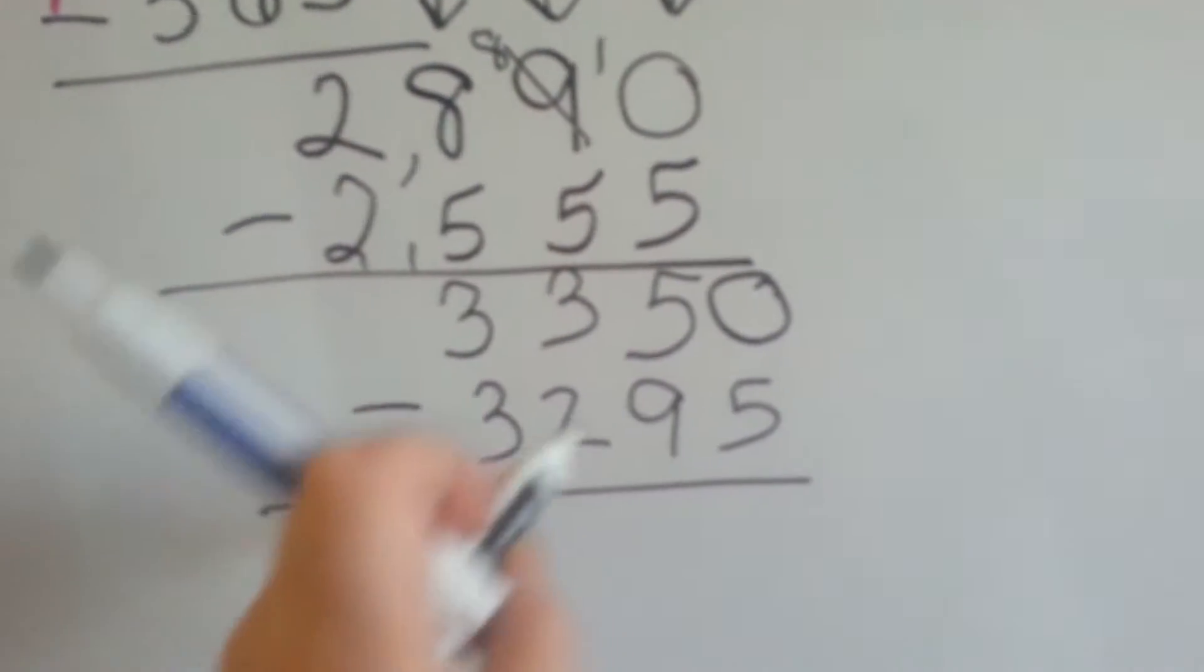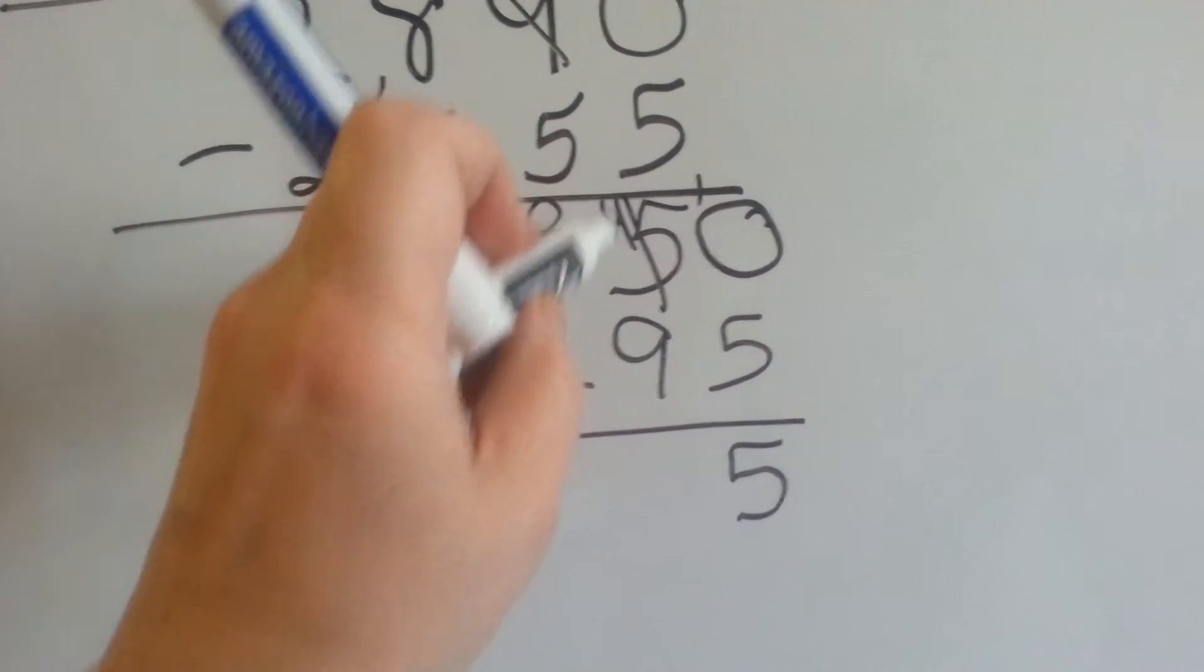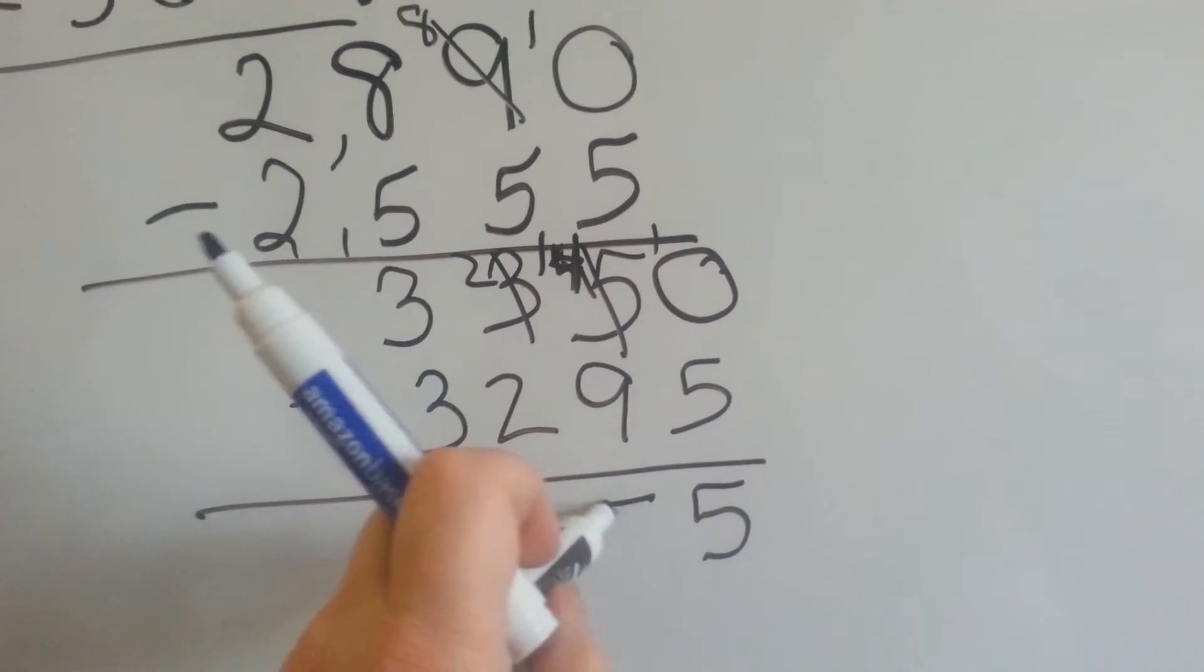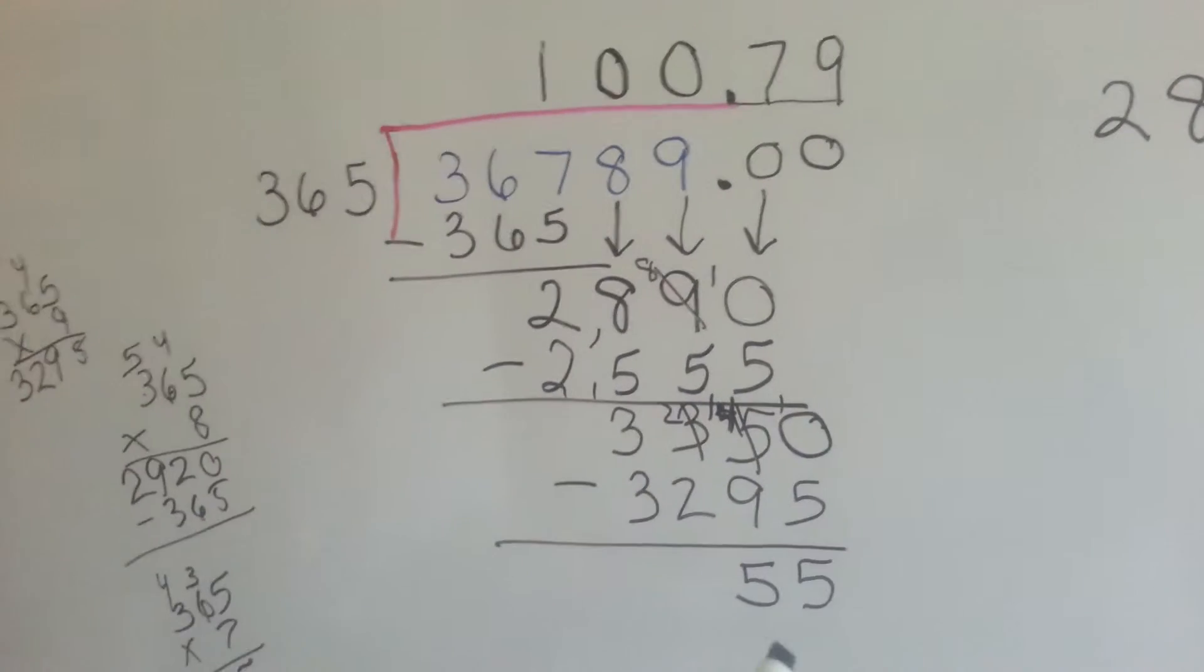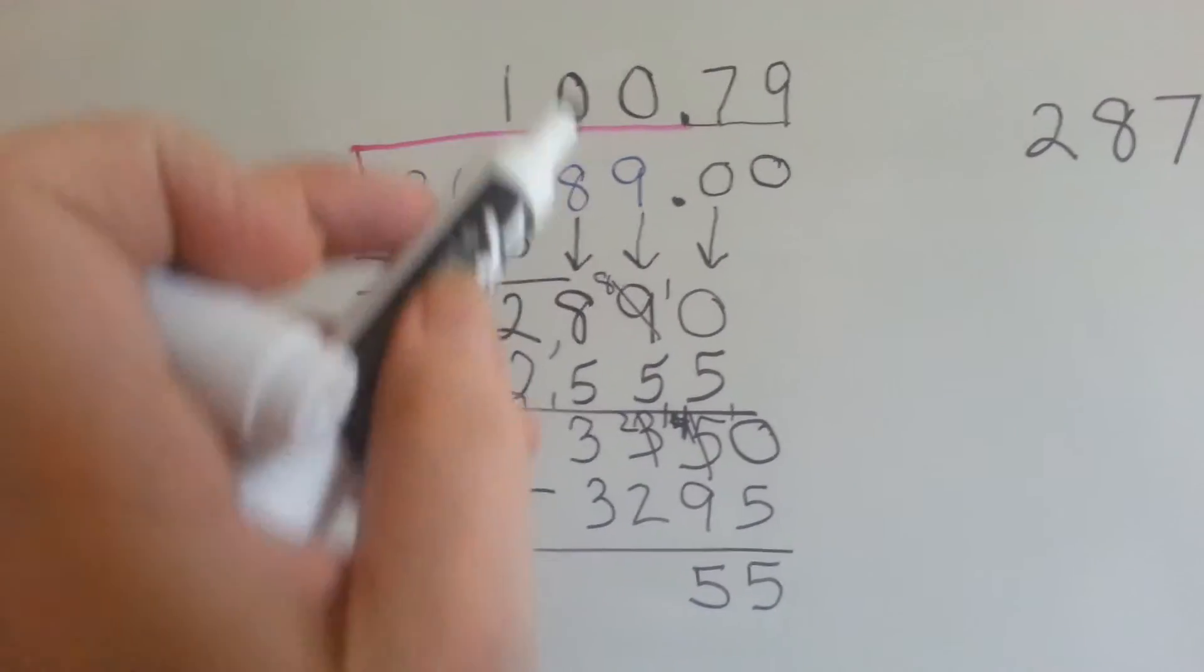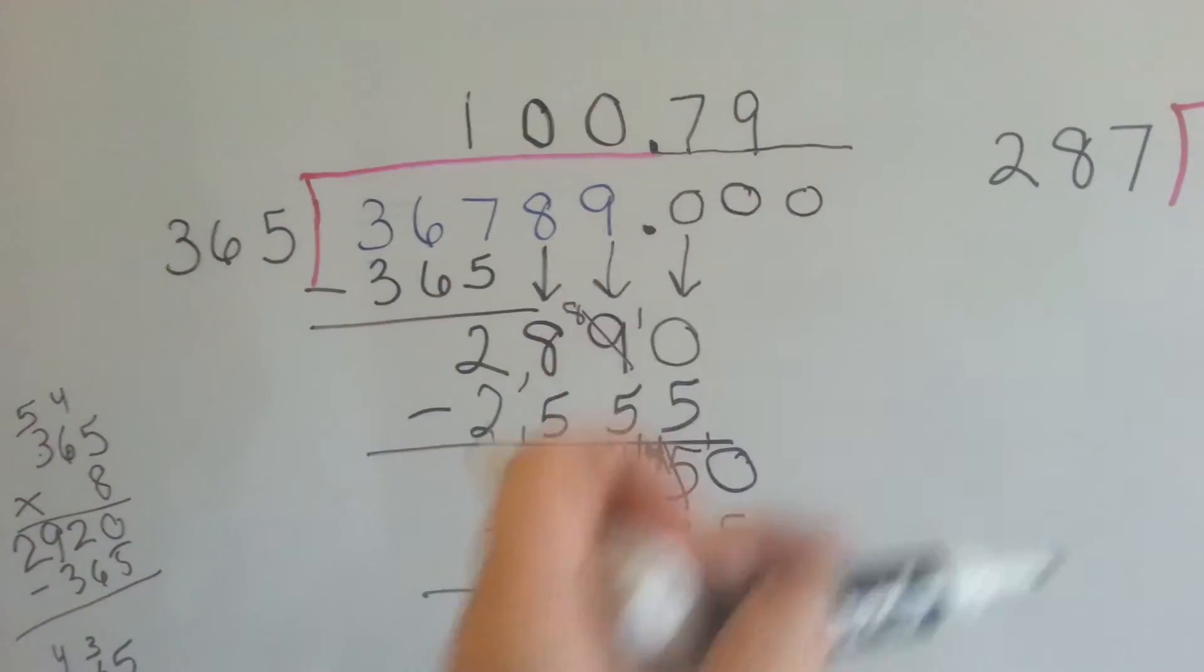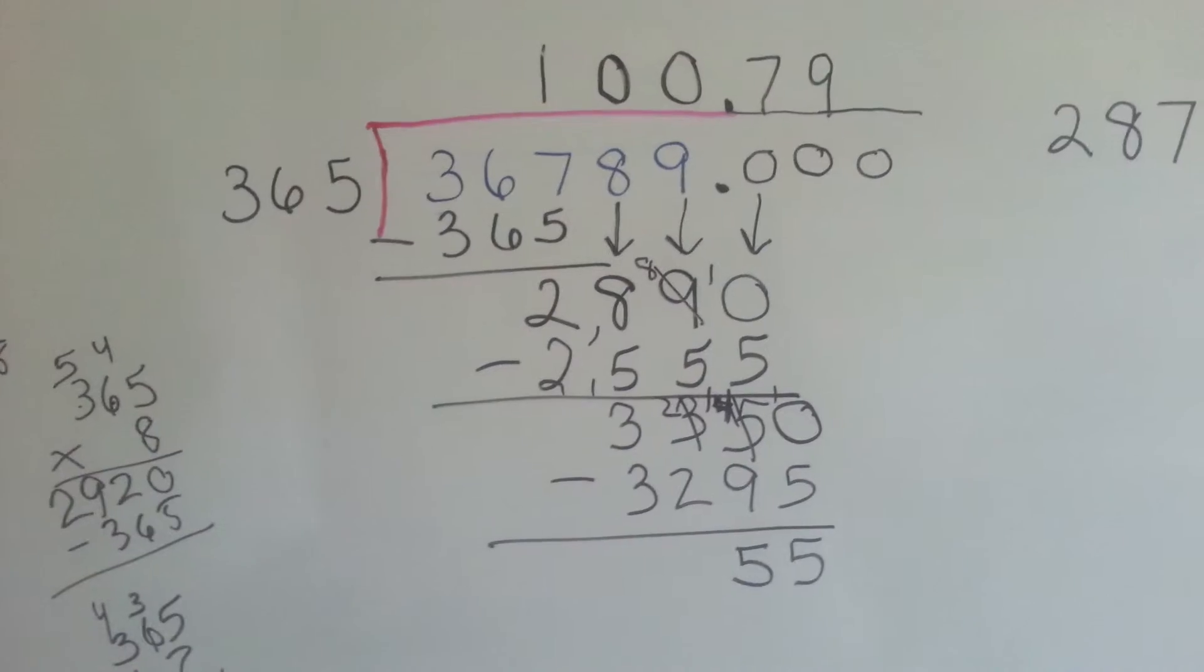And we're going to put our 3295. And we're going to do subtraction. We can't have 0 and take 5 away, so we have to borrow. 4 take away 9, we can't do that either. So we have to borrow again. So now we have 14 take away 9, that's 5. 2 take away 2 is 0. 3 take away 3 is 0. Now, we either have a fraction again of 55 as the numerator and 365 as the denominator, or we can add another 0. And actually, we can keep going on forever by adding 0's and having the decimal. We could have 10 numbers past this decimal if we wanted to.